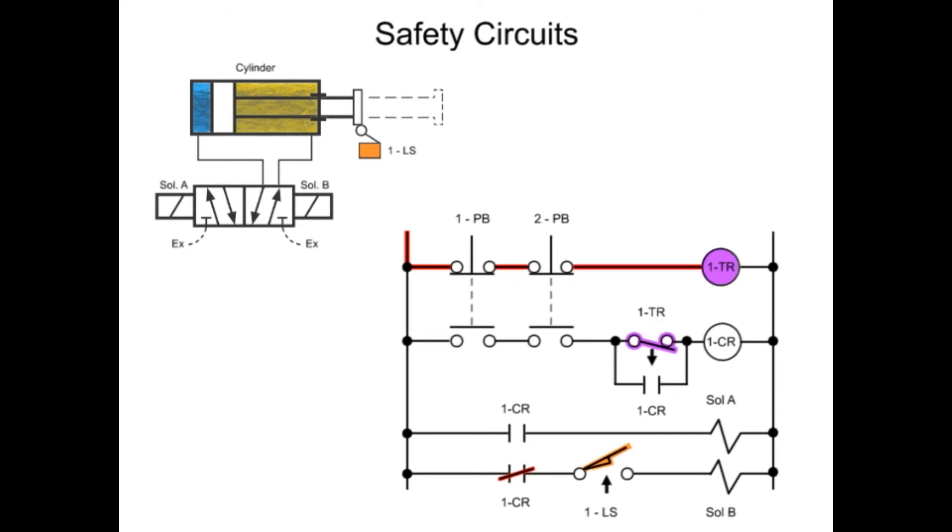Only when an operator depresses both buttons within the off-delay timer countdown period can power flow to the 1CR contact relay and energize the bypass circuit. The timing relay will remain closed until its countdown completes, usually just a fraction of a second. After the allotted time, the normally open-timed open-timer contact swings open.